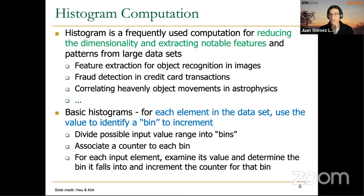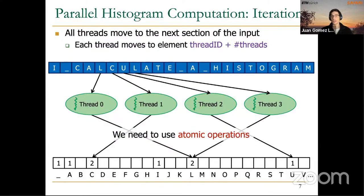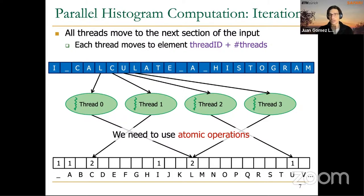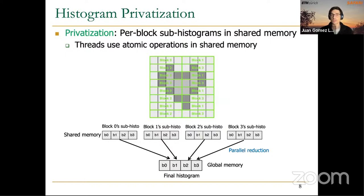The second parallel pattern we studied was histogram computation. A histogram is a data structure containing bins or counters that count the number of occurrences for certain values or ranges of values in an input dataset. When implementing histogram computation in parallel, we need atomic operations. Atomic operations are very useful but entail important overhead because they cause serialization when threads try to update the same memory position. We discussed different ways of optimizing histogram computation and talked about privatization.